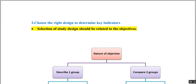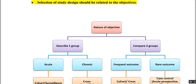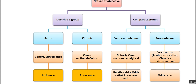Let us see a quick summary or recap. First, see whether your objective is describing one group or comparing two groups. If it is describing one group, check whether it is an acute or chronic condition. If it is an acute condition, you could use a cohort or surveillance study, which measures incidence.